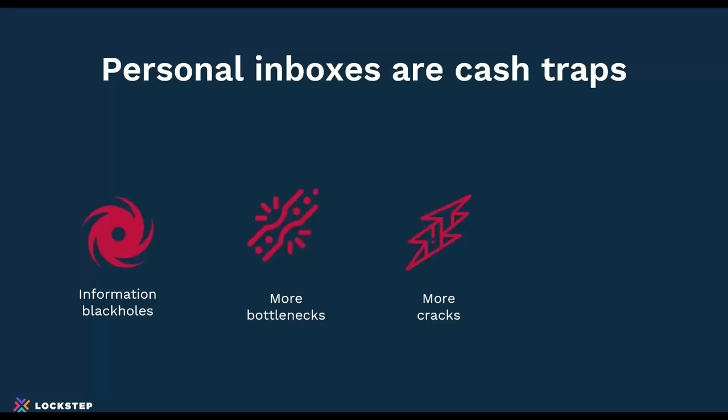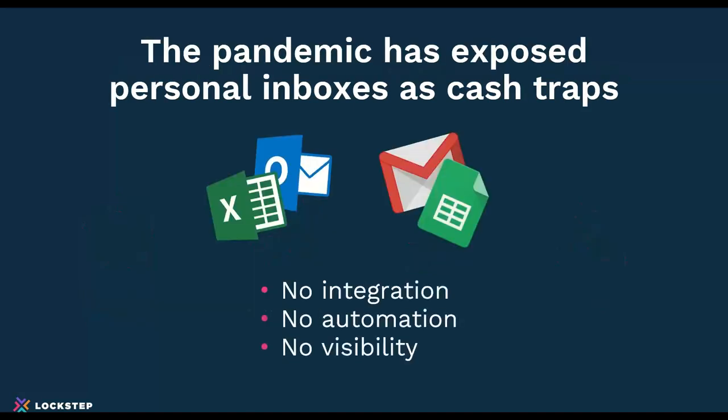All of this can lead to fire drills. Something gets escalated because it's stuck in the black hole, bottlenecked, or lost in a crack, and at some point it becomes a fire drill — now you're just reacting. This is a typical dynamic because personal inboxes were never designed for the accounting process. Outlook and Gmail don't integrate with Sage. There's no automation to handle mail merging of data into emails or archiving according to customer records. There's no visibility — you can't search across all of these. And it's certainly not controlled; you can't have specific business rules driving this.